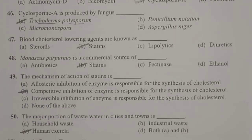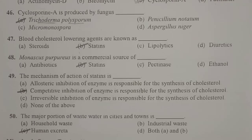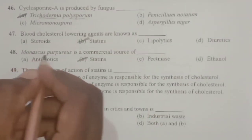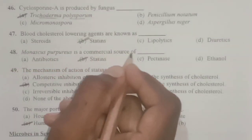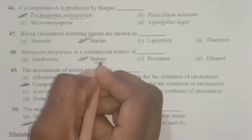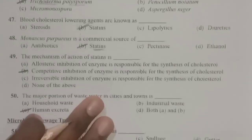Next: the blood cholesterol-lowering agents are known as statins. Statins are the blood cholesterol-lowering agents usually obtained from Monascus purpureus. Next: Monascus purpureus is a commercial source of statins. Statins are blood cholesterol-lowering agents obtained from Monascus purpureus.